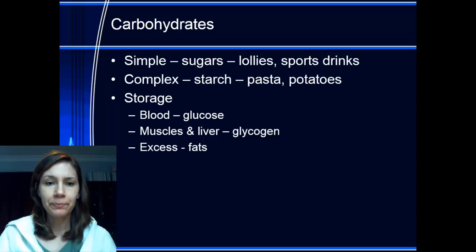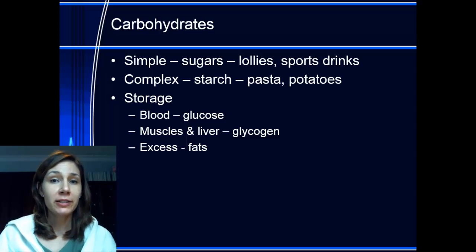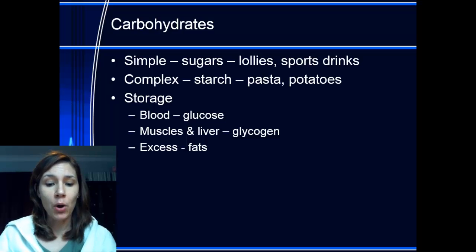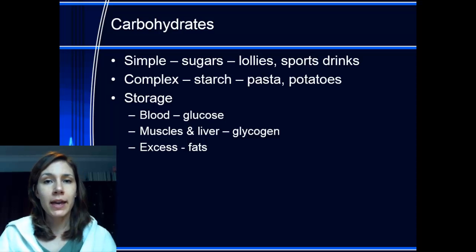sort of carbs they'll be using, because they store a lot more. When carbs are stored, there are three different spots: blood as glucose, and in the muscles and liver as glycogen. But when the muscles and liver have taken as much glycogen as they can, the excess carbs are stored as fats.